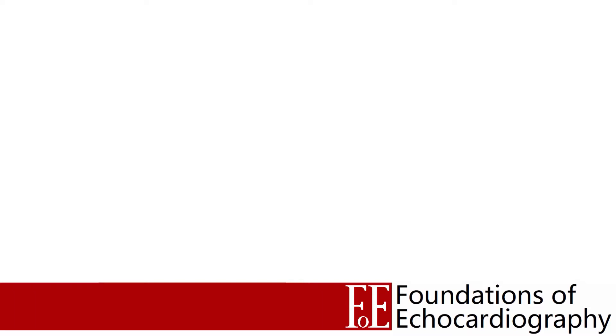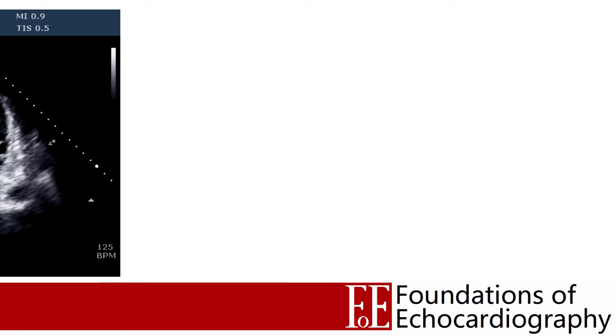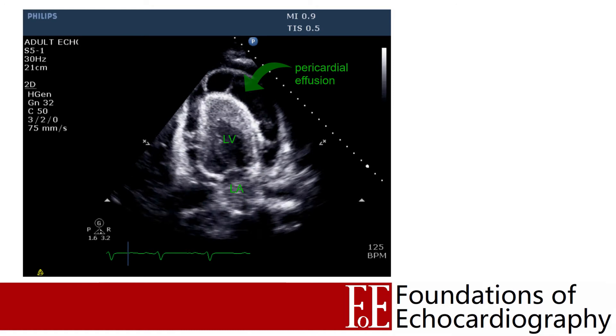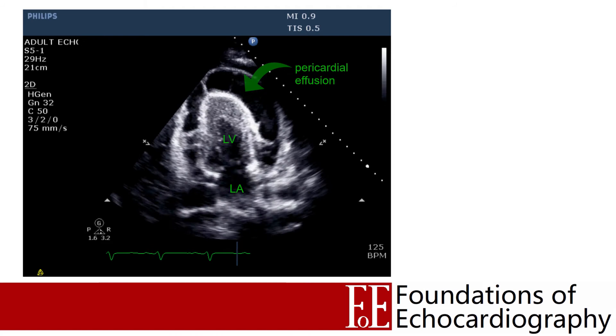In addition to size and location, you may wish to describe the appearance. We divide effusions into simple effusions and complex effusions, which have a solid component such as clotted blood or pus in cases of empyema. This apical two-chamber view shows a large effusion surrounding the heart with solid septations floating within the fluid — this is a malignant effusion in a patient with lymphoma.